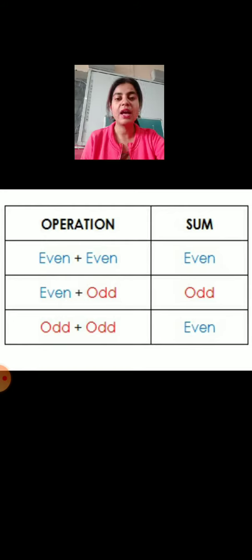Next, if we have an even and an odd number as our addends, then the result will be a sum which is an odd number.